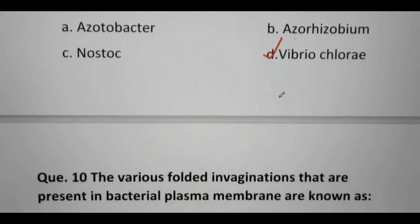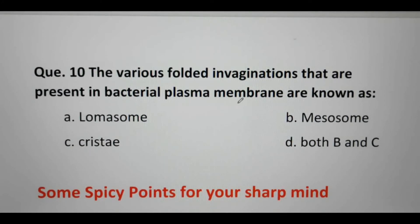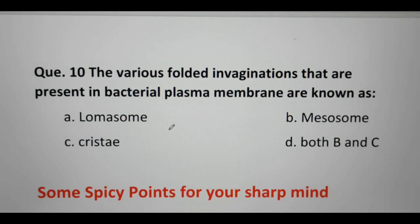Vibrio means coma-shaped bacteria, and it causes cholera in human beings. Next question: the various folded invaginations present in bacterial plasma membrane are known as — Lomasome, Mesosome, Cristae, or both B and C? Lomasome invaginations are present in fungi and higher plants. Mesosome is the bacterial invagination — that is our right answer, Mesosome.